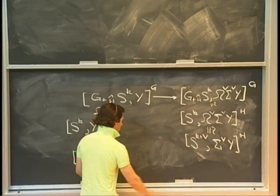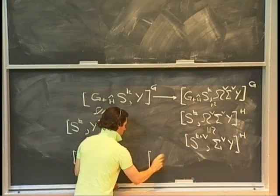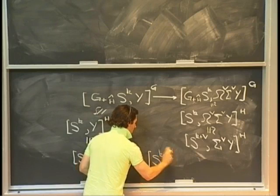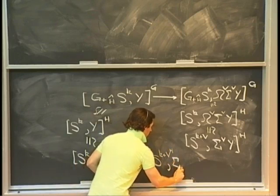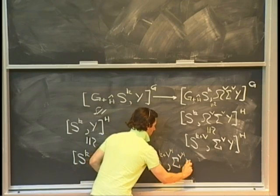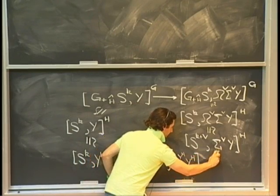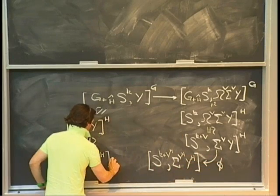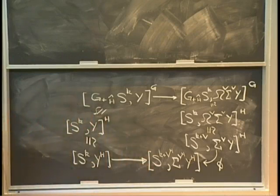That is the same as maps from the k-sphere into the H-fixed points of Y. And the other side was H-equivariant maps from the k-sphere into the loops-suspension of Y, which I could rewrite by adjunction as the k-plus-V sphere mapping into the V-fold suspension of Y. Then I had a restriction map taking me to the (k+V) H-fixed points into the V-H suspension of the H-fixed points of Y.